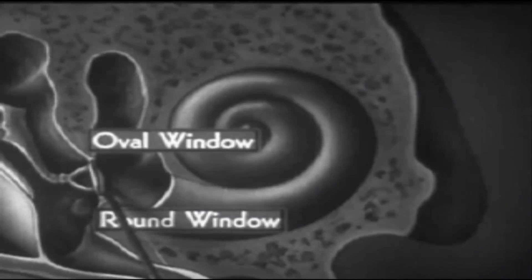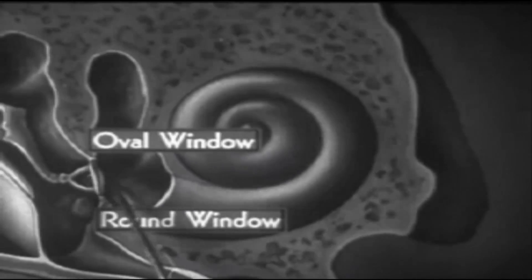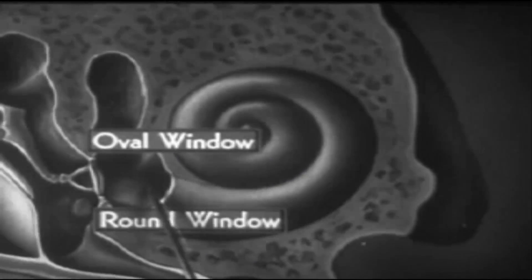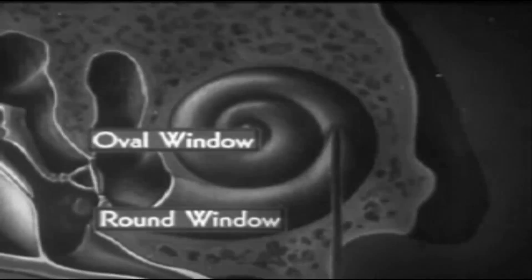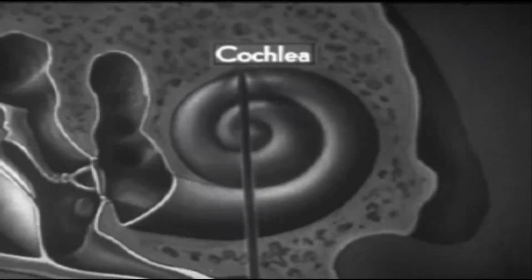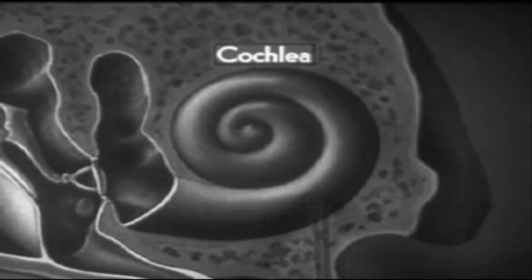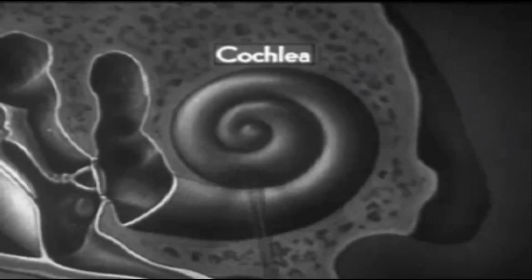The second, the oval window. Through it, I received sound impulses transmitted by the plate of the stapes, which covers it. And the third opening leads into the upper half of the passage, which has the shape of a snake or cockle shell, and so is called the cochlea. Within the cochlea is contained the mechanism which finally converts sound vibrations into nerve impulses.